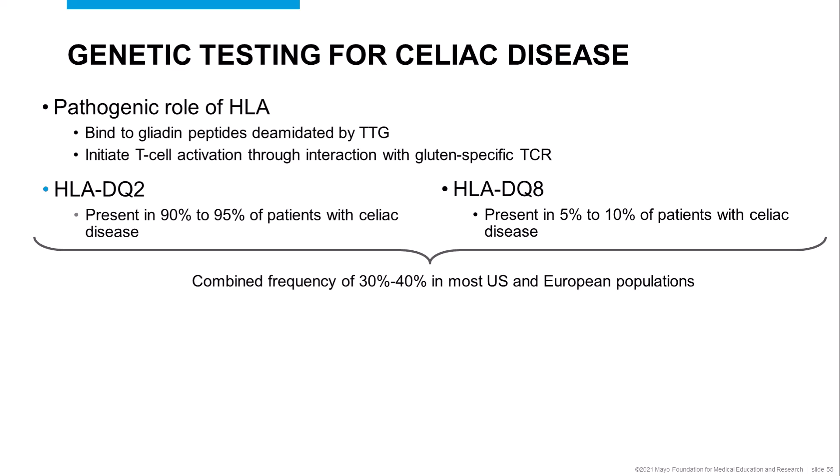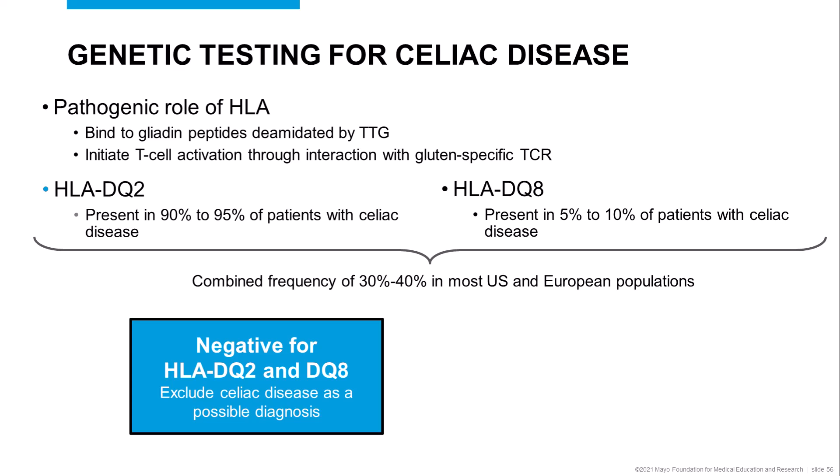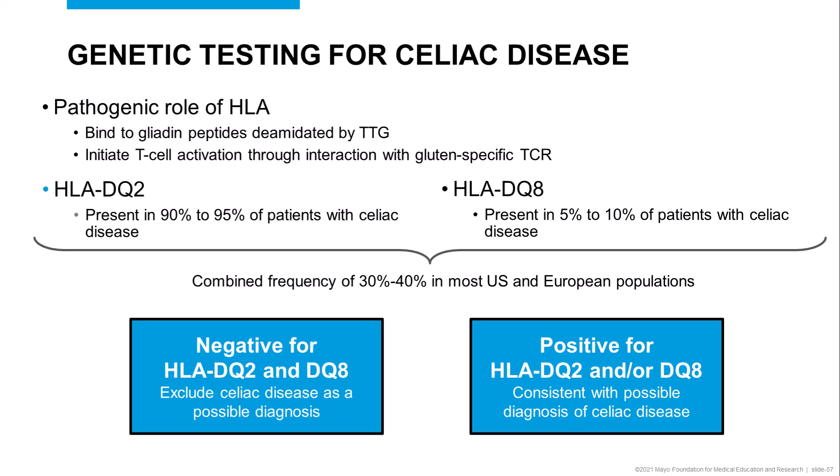So what does this mean for the utility of HLA typing for celiac disease? The power of HLA testing lies in a negative result. If a patient is negative for both HLA-DQ2 and DQ8, we can exclude celiac disease as a diagnosis. In contrast, if the patient is positive for either HLA-DQ2 or DQ8, we can only say that the patient has the genetic susceptibility for celiac disease and may or may not develop the disease in his or her lifetime.